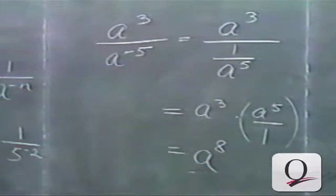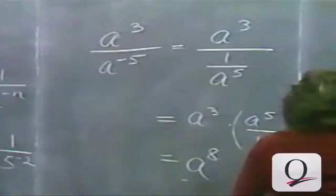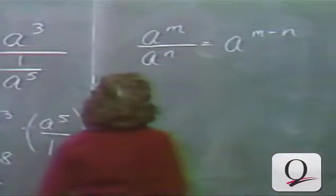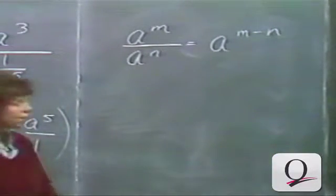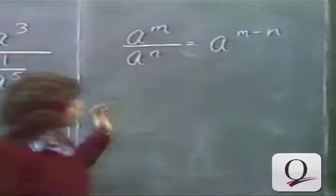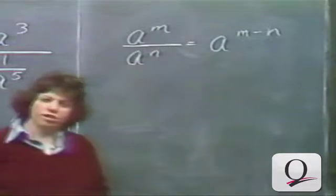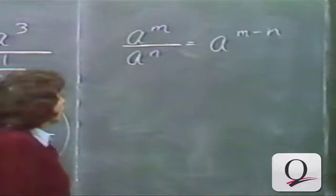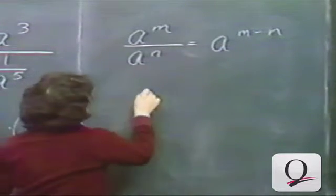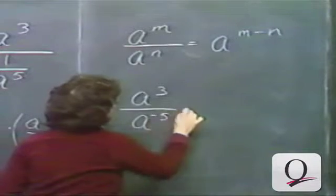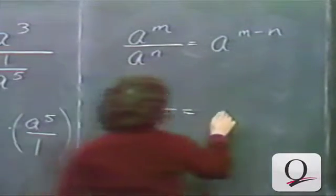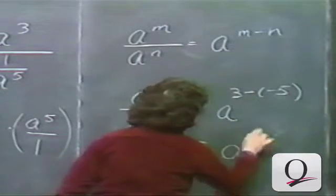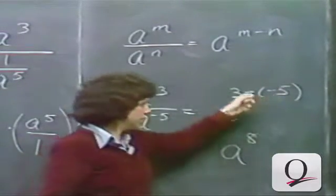There's a more direct way of doing this. We had a rule: a to the m power over a to the n power is a to the m minus n power. We can now apply this for zero and negative exponents as well. So a to the third over a to the minus 5 is a to the 3 minus (minus 5), which immediately gives a to the 8th power. 3 take away minus 5 is the same as 3 plus 5, or 8.